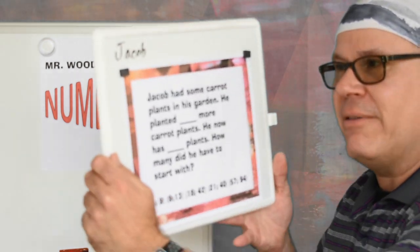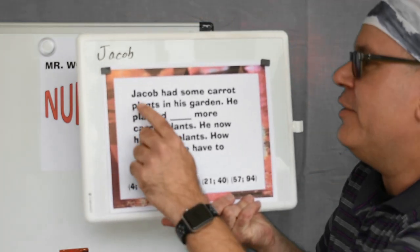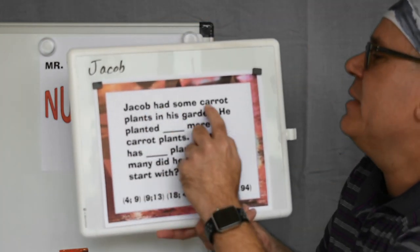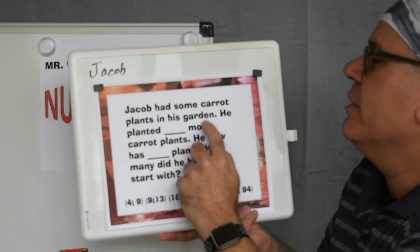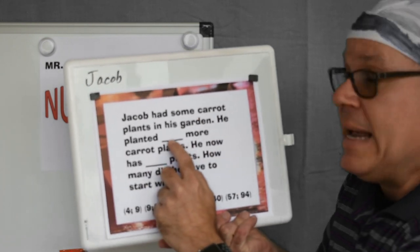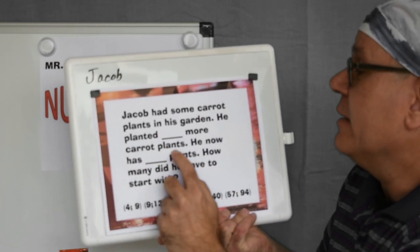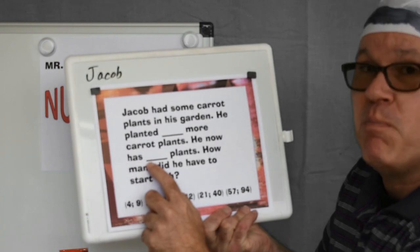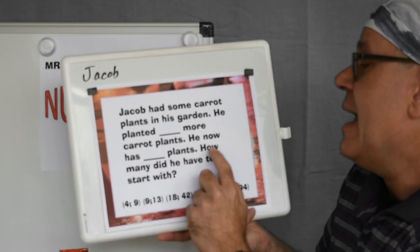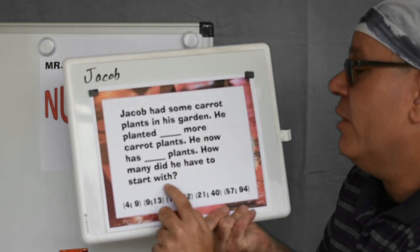Today, let's take a look at what we have. We're talking about Jacob. Jacob had some carrot plants in his garden. He planted blank more carrot plants. He now has blank plants. How many did he have to start with?